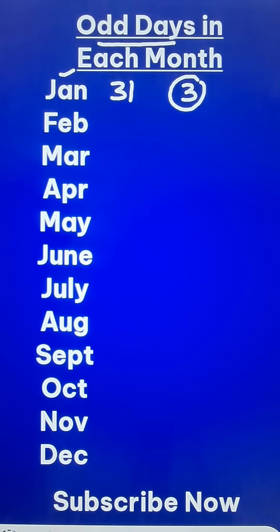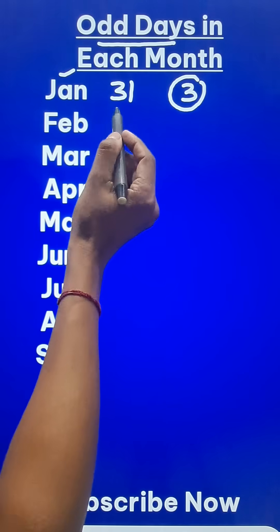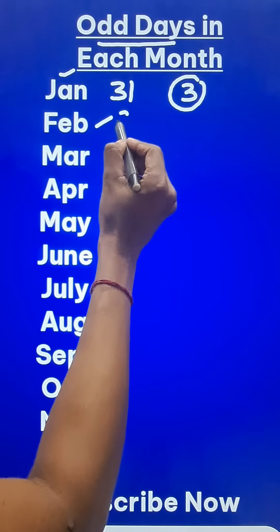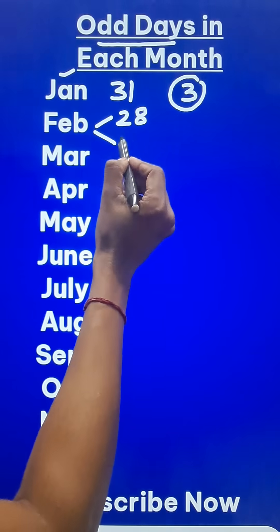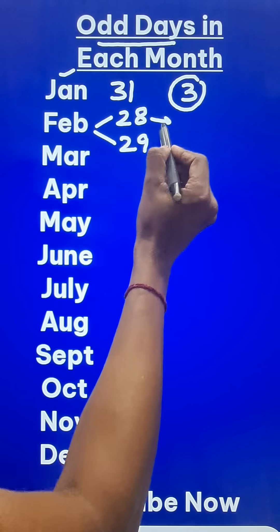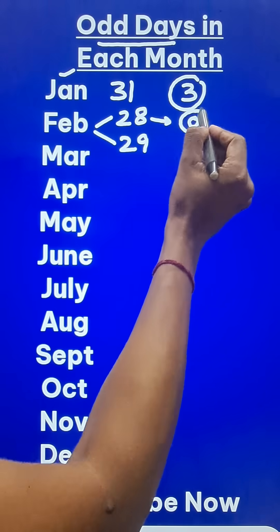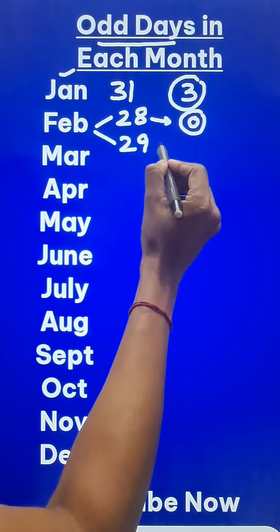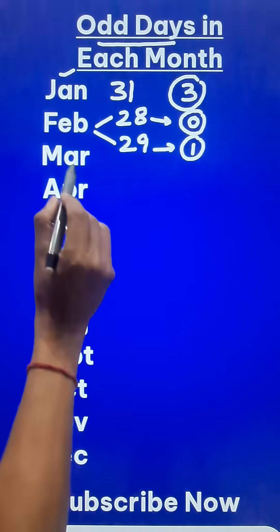In the month of February, if it is a leap year and then a non-leap year, the number of days in February vary — it can be 28 or 29. So if there are 28 days in February, then there are 0 odd days because 28 is divisible by 7. And if there are 29 days, then there is 1 odd day.